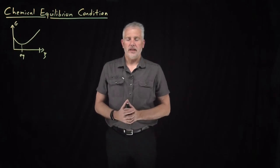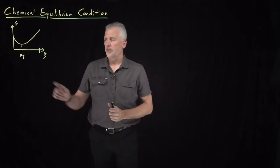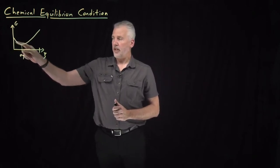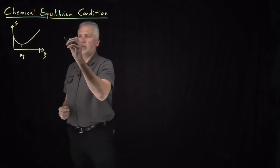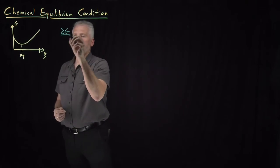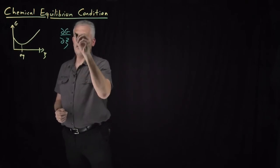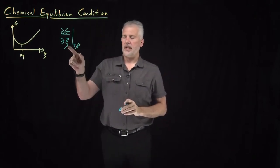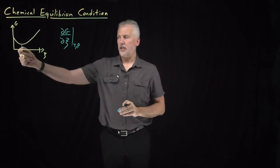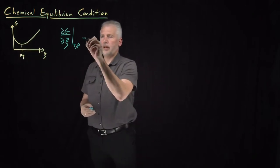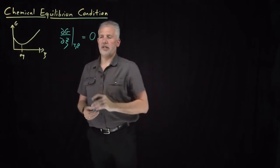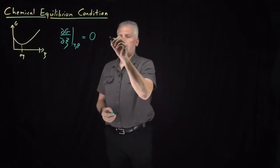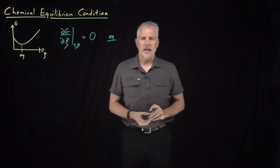Qualitatively, we understand the condition that a reaction should obey when it's at equilibrium — that should be when its free energy is at a minimum. More quantitatively, we can say that when the rate of change of the free energy as I change the extent of reaction, if I move a little bit forwards or a little bit backwards, if that rate of change of the Gibbs free energy is zero at constant temperature and pressure, then that's our condition for being at equilibrium.